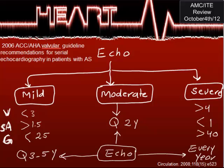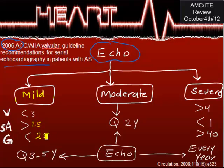The ACC/AHA valvular guidelines recommend serial echocardiography for patients with aortic stenosis. For mild aortic stenosis — surface area less than 1.5 cm², gradient around 25, velocity less than three — echo is repeated every three to five years. For severe aortic stenosis — gradient more than 40, surface area around one, velocity of four — annual echo is performed. The mild category needs less frequent evaluation than the severe category.